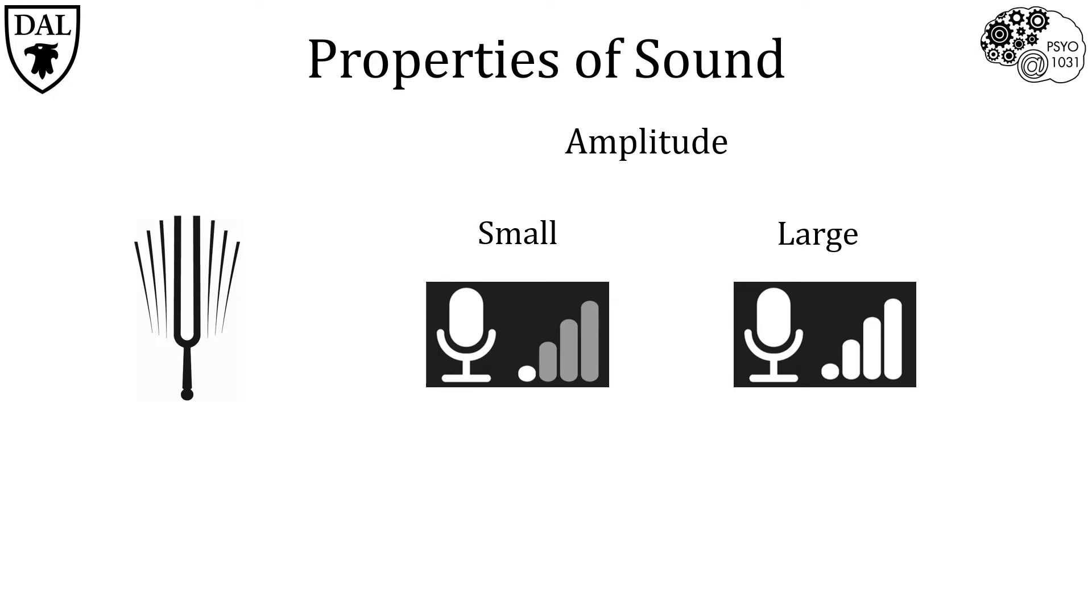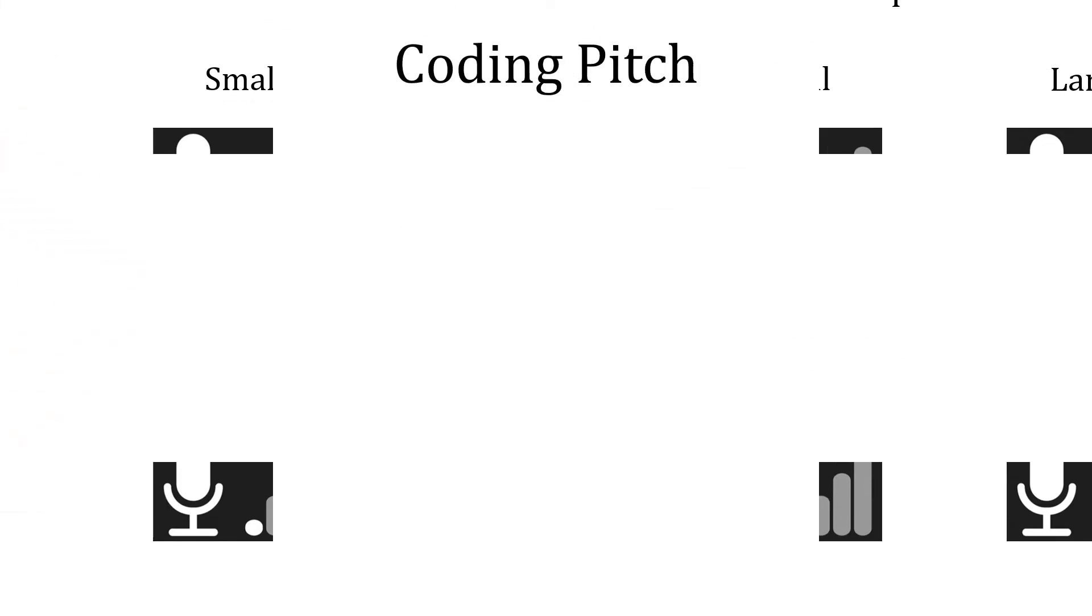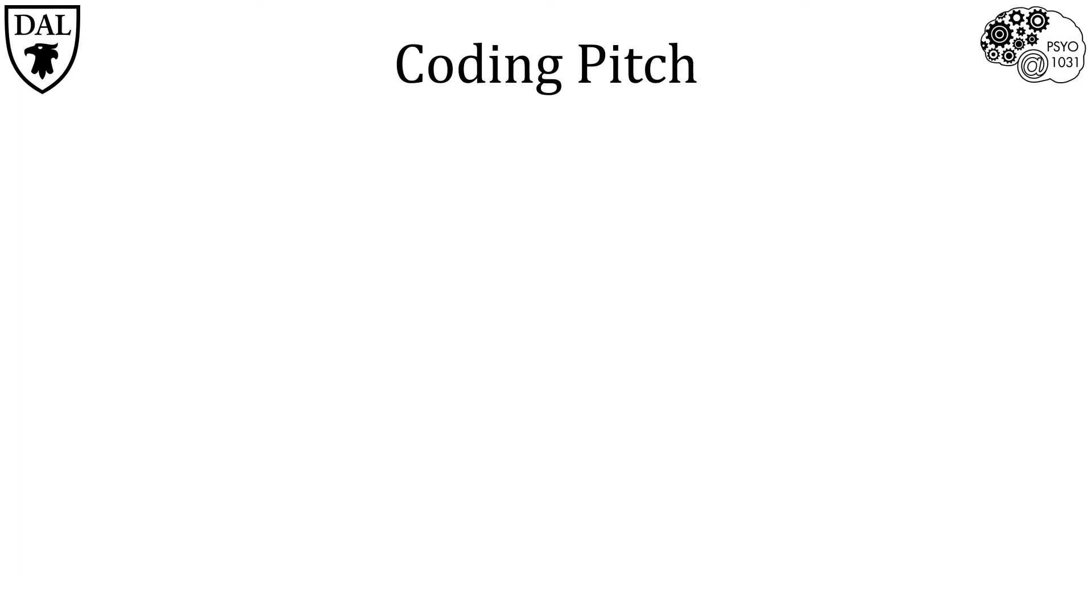So, now that we know sound waves come in different forms, how does the cochlea distinguish between different types of sound waves? Let's first focus on how the cochlea identifies pitch. Several theories have been proposed for pitch perception. Here, we'll focus on the two main theories of pitch perception.